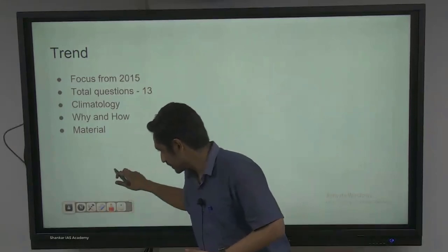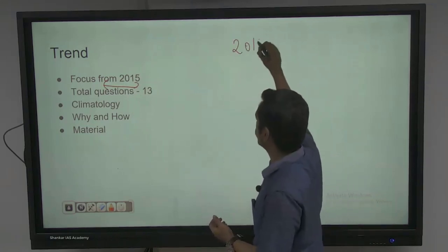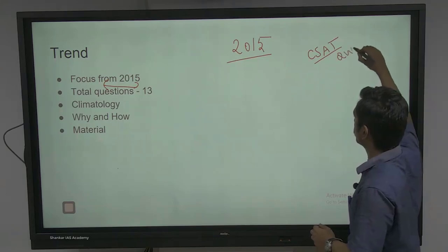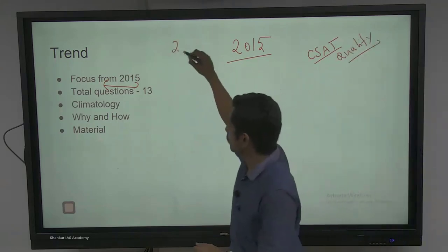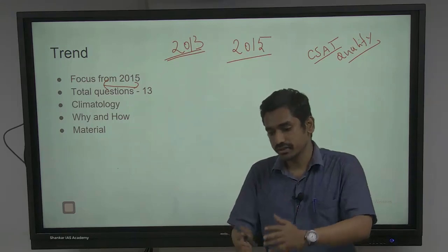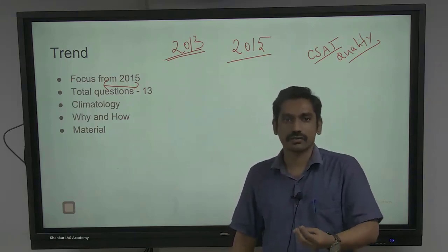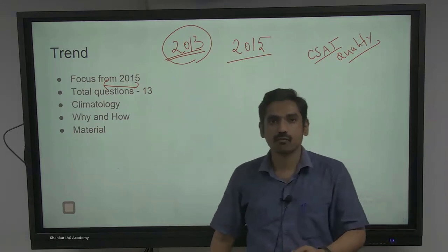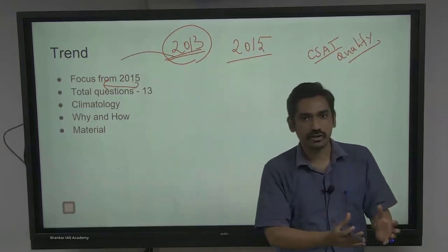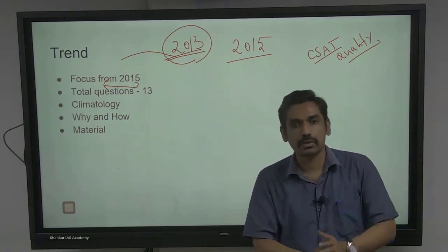I'm going to deal with topics primarily from 2015. Why 2015? Because in 2015, one significant change was made in the exam pattern: CSAT becomes a qualifying paper, not a scoring paper. And in the year 2013, the Indian Forestry examination was first properly integrated. If you're going to test a candidate for Indian Forest Service in prelims over 100 questions, naturally you would get more questions from environment.